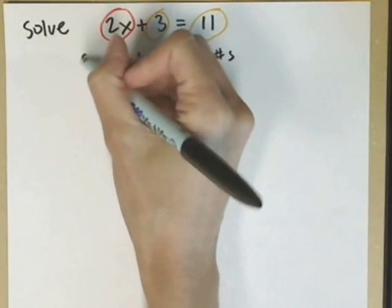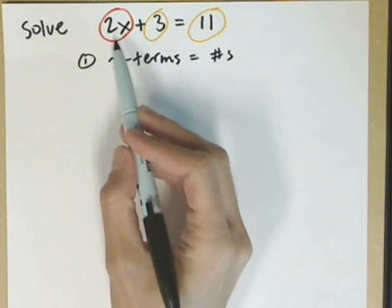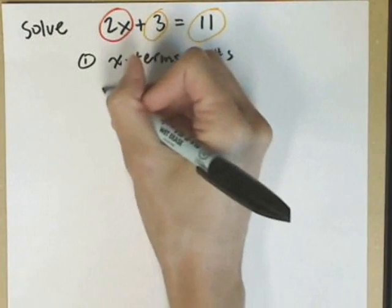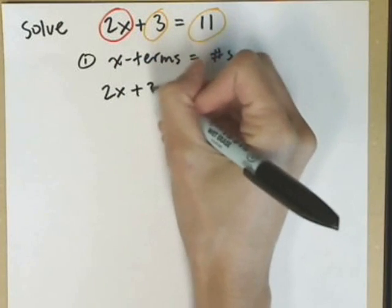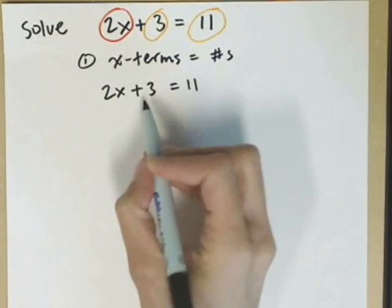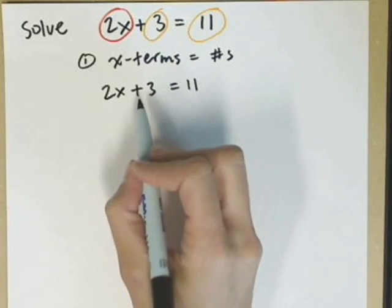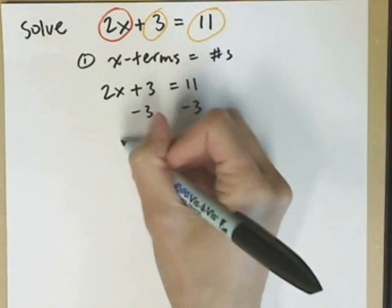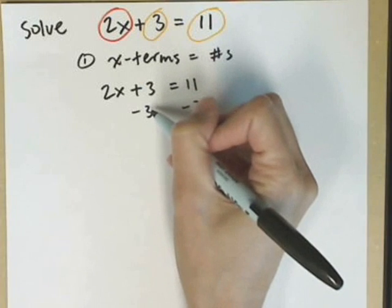So I'm going to go ahead and take that first step of getting the 2x on one side, but then I'm going to move the 3 over to be with the 11. Let me rewrite 2x plus 3 equals 11. I don't want the 3 here. It's being added, so we subtract. 3 minus 3 is 0.